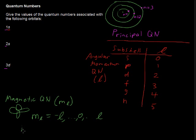So for example, if L equals 1, then M sub L would equal negative 1, 0, and positive 1. Okay, so we follow that structure. If L were 2, M sub L could equal negative 2, negative 1, 0, 1, 2.